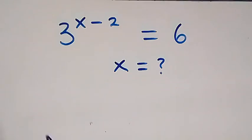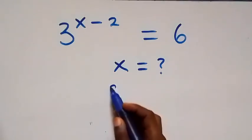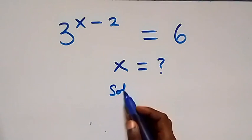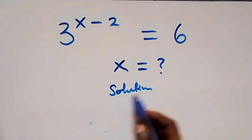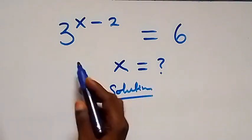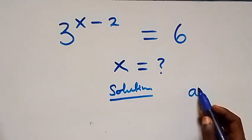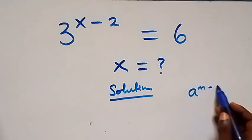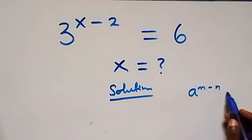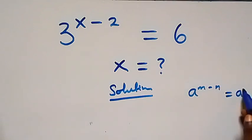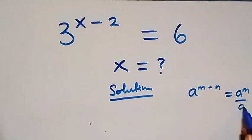Hello, you're welcome. How to solve this nice exponential equation. From what we have here on the left-hand side, this follows from the law of indices: a raised to power m minus n is the same thing as a raised to power m over a raised to power n.